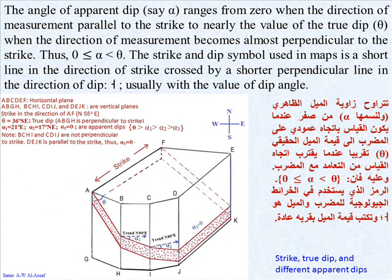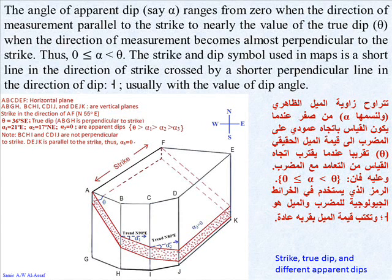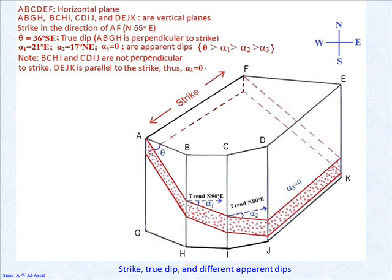The angle of apparent dip, alpha, ranges from zero when the direction of measurement is parallel to the strike, to nearly the value of the true dip, theta, when the direction of measurement becomes almost perpendicular to the strike. Thus, alpha is greater than or equal to zero and less than theta. The strike and dip symbol used on maps is a short line in the direction of strike crossed by a shorter perpendicular line in the direction of dip, usually with the value of the dip angle.